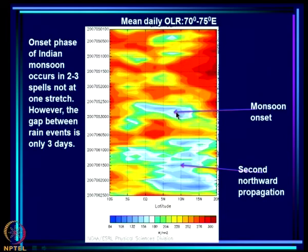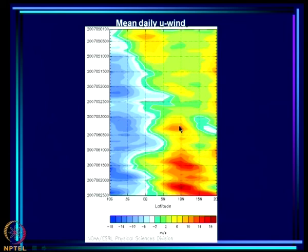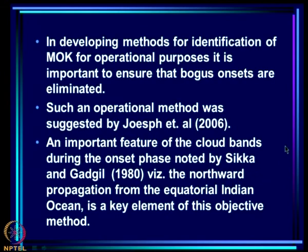The onset occurred on May 28th, and by that date the mean daily precipitable water had already started moving northward and increasing over the region, continuing to increase throughout — much more so with the second rainfall event. Similarly, the mean daily wind began increasing around May 30th and continued to increase. This illustrates that cloud systems do not monotonically propagate from the equatorial region to the monsoon zone during the onset phase.